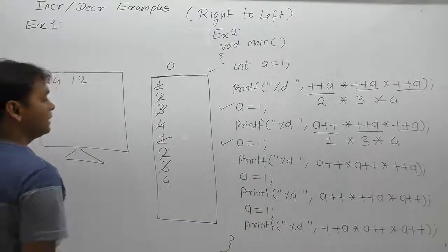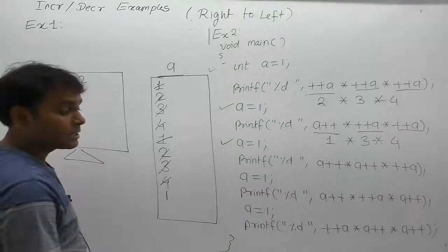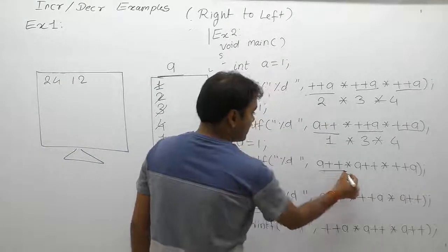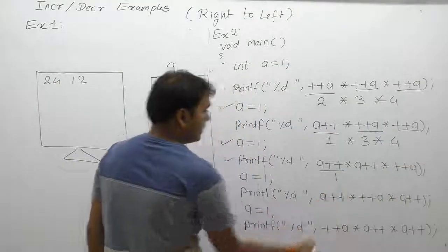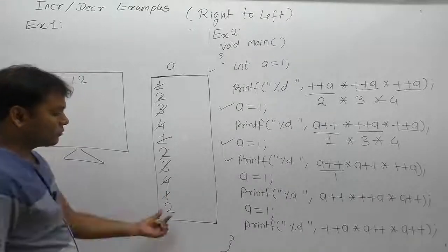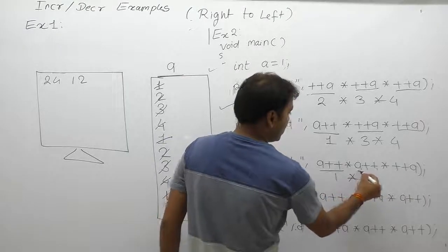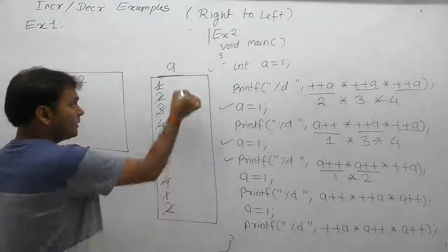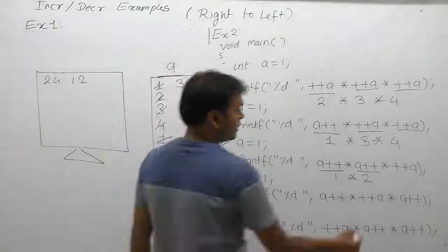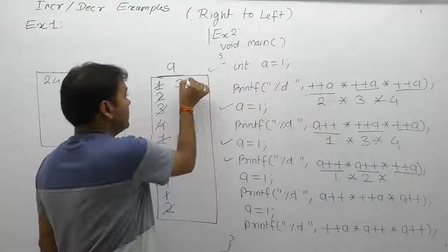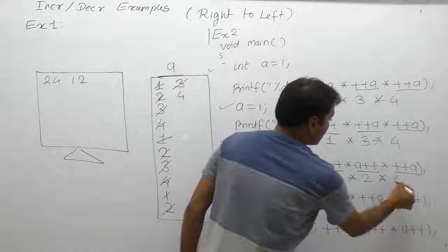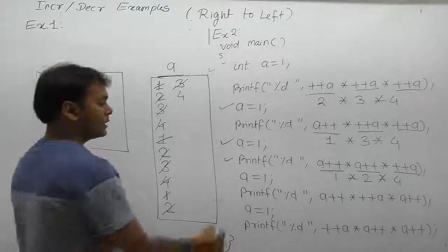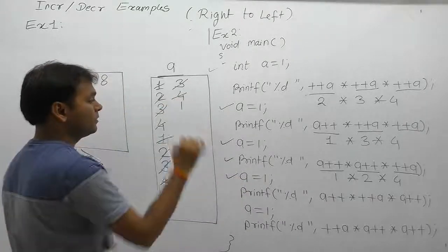Before solving the next printf, a is again re-initialized by 1. Now: post-post-post — replacement first, replace current value of a which is 1, then increment — a becomes 2. Multiply. Post again — replace value of 2 then increment — a becomes 3. Next pre — increment first, a becomes 4, then replacement. So 1 times 2 times 4 is 8. The result 8 is printed.